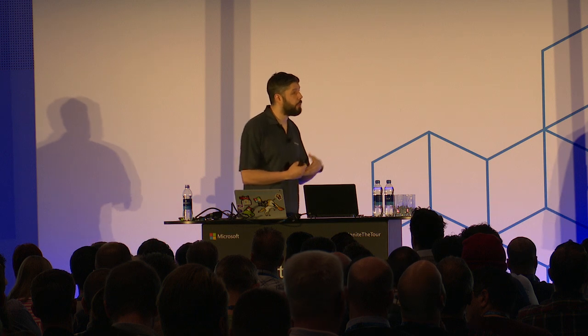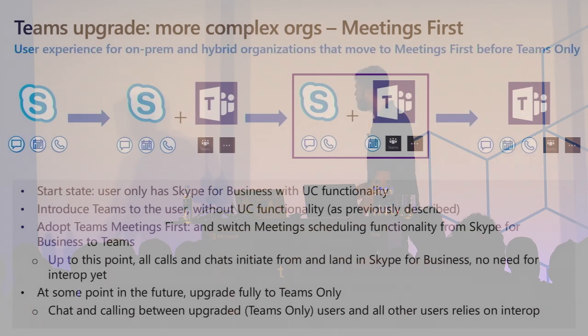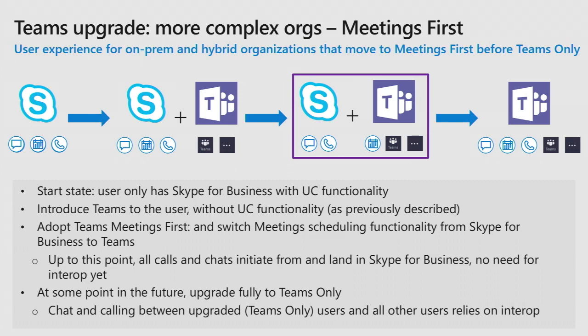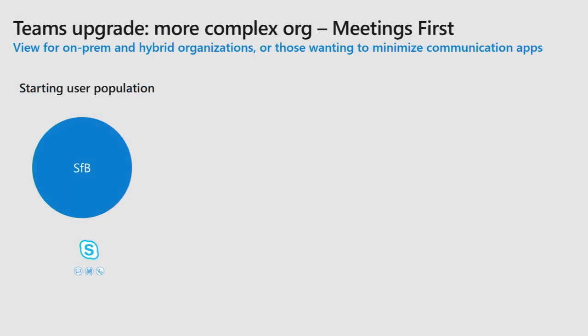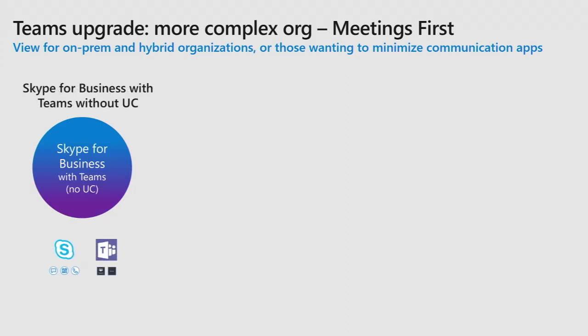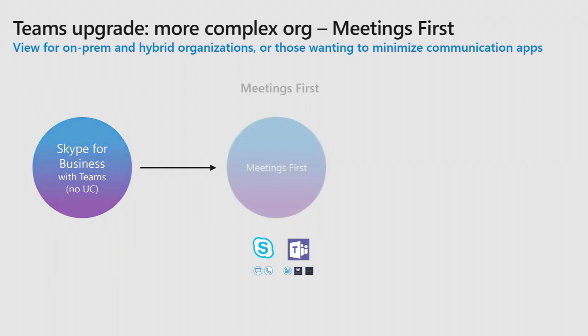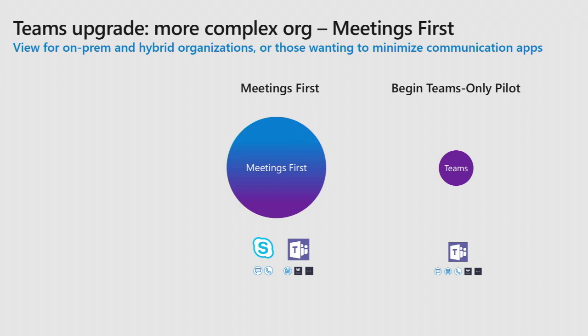At a certain point people are happier with their meeting experience — higher quality audio and video. What we've seen is that most customers then get questions like: oh wait, this is pretty cool, can we do one-on-one calls with this as well? Sure you can. Now we can do one-on-one calls with Teams as well. So this is our strategy for larger organizations — you can just move meetings to Teams, use Teams as your meeting solution before you go full-on Teams. Start with Teams without UC together with Skype for Business, move to Meetings First, and at that point you move to Teams as well.